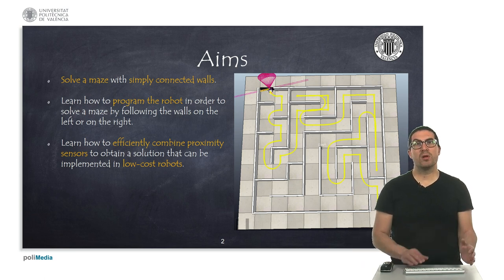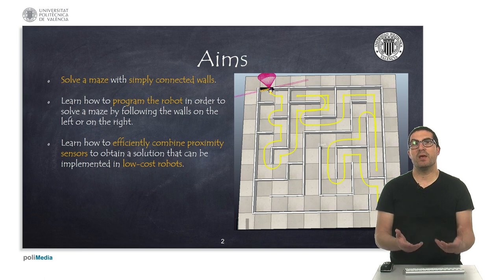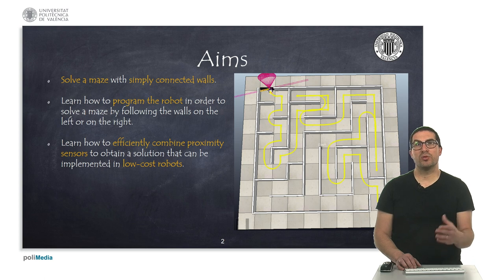Either walls on the left or walls on the right. And actually, the ultimate goal is to explain how to implement this in an efficient way, so it can be implemented in low-cost robots using proximity sensors, such as the Dauer robot.